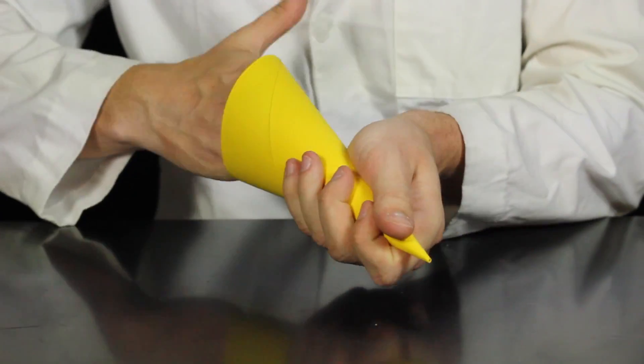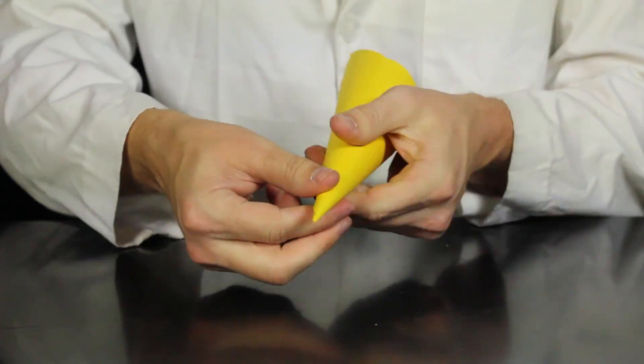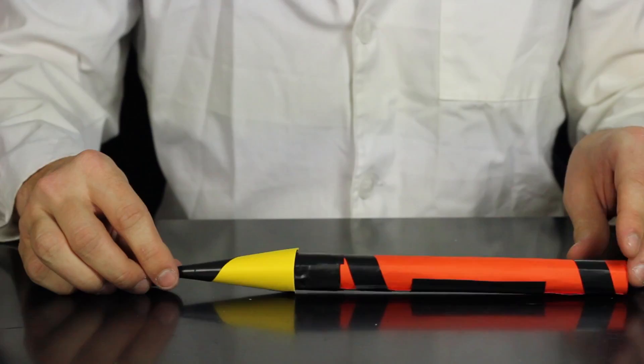Now it's time to make your rocket's nose cone. Roll a piece of cardstock into a cone shape and then cut it to size and attach it to the front of your rocket.